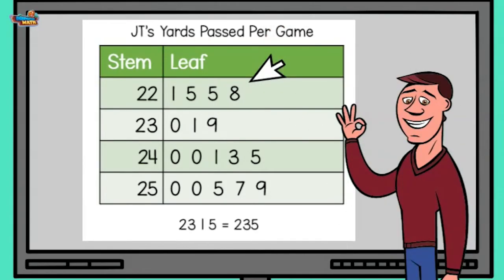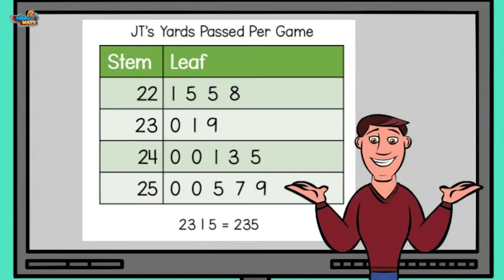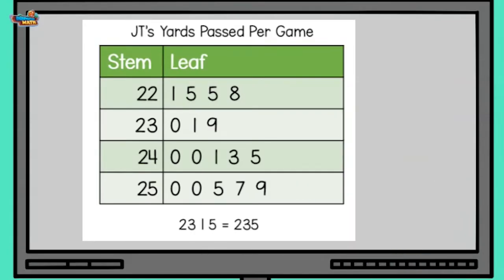How many games did I play in? To figure this out, count the amount of leaves listed in the data. Altogether there are 17 leaves. How many times did I throw more than 240 yards in a game? To do this we will look at data points that represent numbers higher than 240.